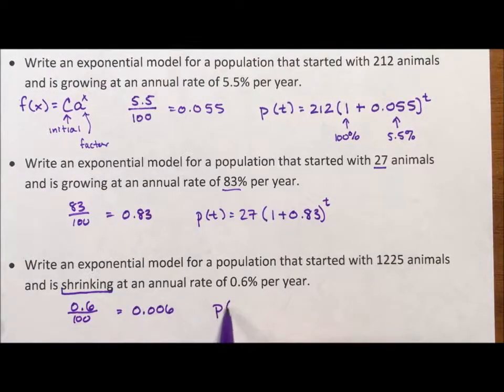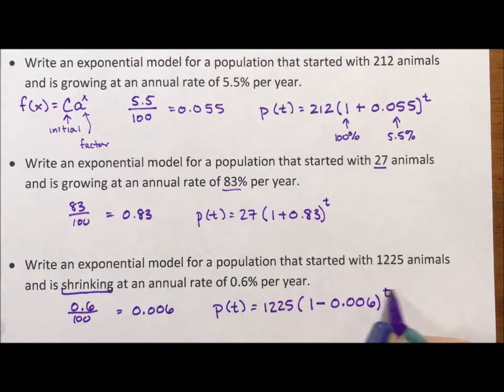So population over time, we start with 1,225 animals. Decay, shrinking, is minus 0.006 to the t.